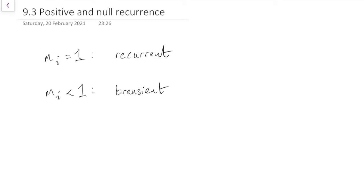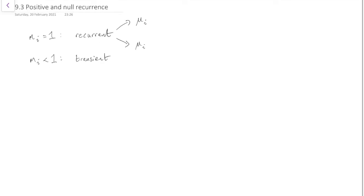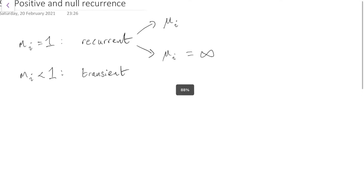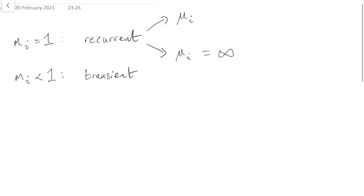Now, the distinction within recurrent goes like this. We split recurrent into two separate bits, depending on the expected return time, which you'll remember from the previous section we called MUI. If the expected return time is infinite, then we say that it's null recurrent, and if it's finite, we say it's positive recurrent.